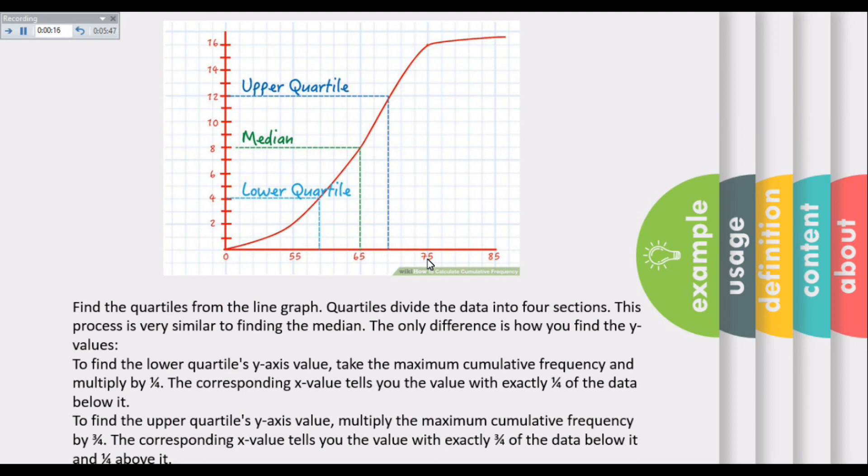To find the lower quartile's y-axis value, take the maximum cumulative frequency and multiply by one-fourth. To find the upper quartile's y-axis value, multiply the maximum cumulative frequency by three-fourths.